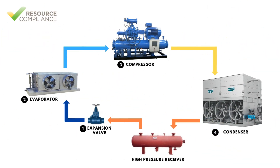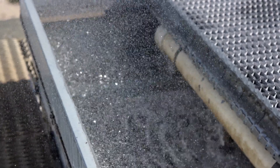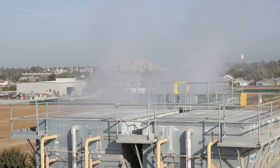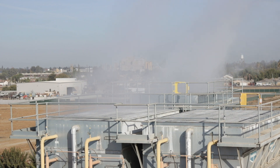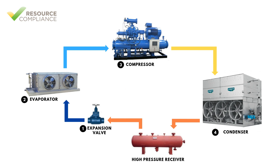Evaporative condensers receive high temperature superheated vapor from the compressor. The refrigerant cycles through the coils as water is sprayed over the coil surface and fans move air across the wetted coil surface. This process causes a portion of the water to evaporate, taking away heat from the refrigerant. This evaporation significantly enhances the cooling process by utilizing water's latent heat of vaporization. As heat is removed, the refrigerant condenses into a high pressure liquid, which exits the condenser and can be supplied to a receiver or expansion device for further use in the system.